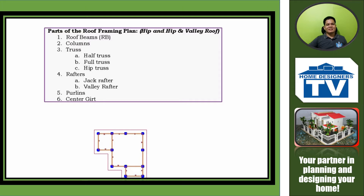These are the parts of the roof framing plan using hip and hip-and-valley roof: 1. Roof beams. 2. Columns. 3. Truss, with 3 types of truss. 4. Rafters and the 2 types of rafters. 5. Purlins. 6. Center girt.